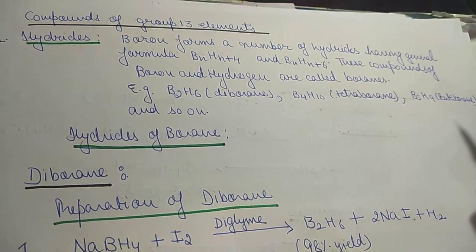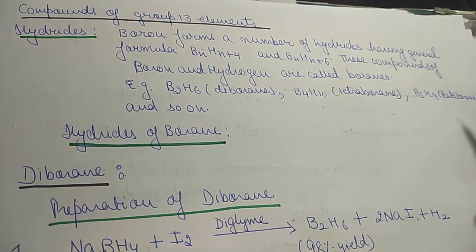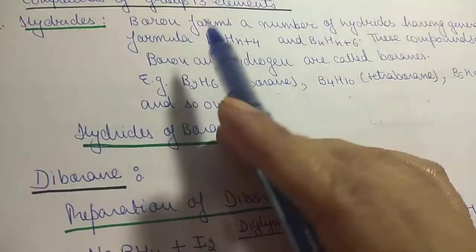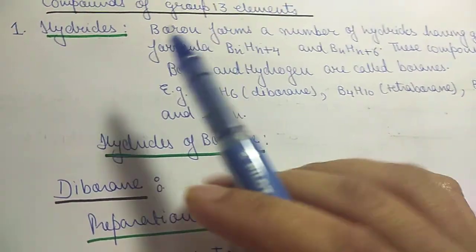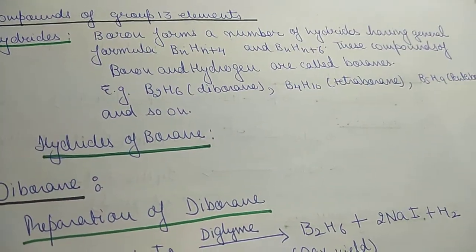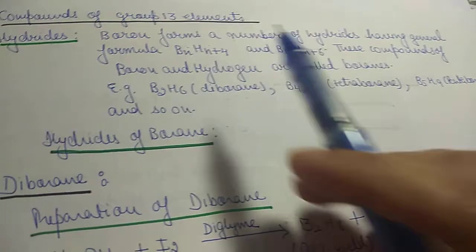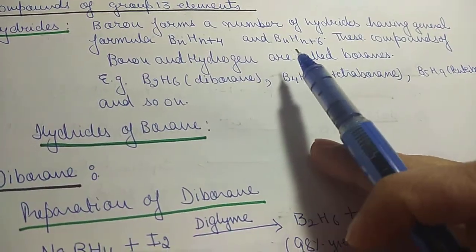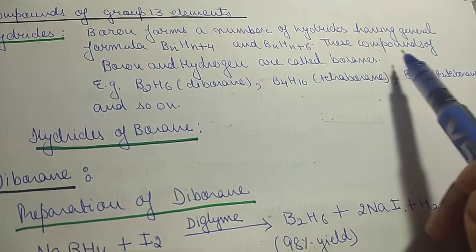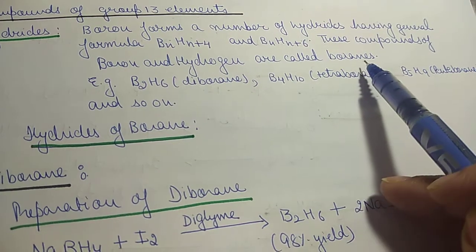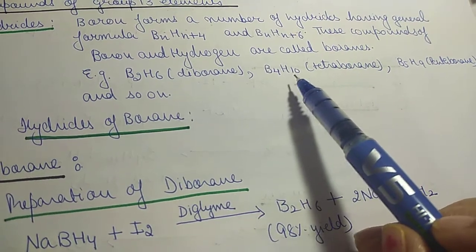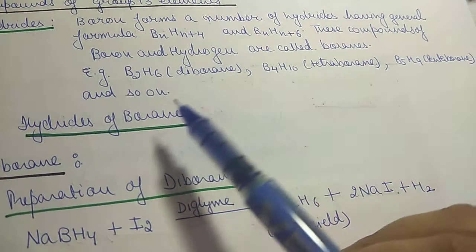Now we have compounds of group 13 elements. First of all, we will take into account compounds formed by boron — specifically hydrides formed by boron. Boron forms a number of hydrides having general formula BnHn+4 and BnHn+6. These compounds of boron and hydrogen are called boranes. Examples are B2H6, B4H10, and B5H9, and so on.